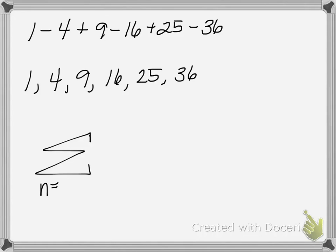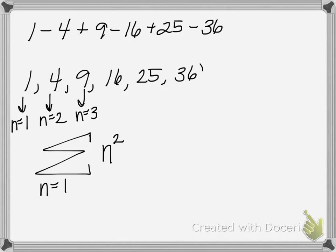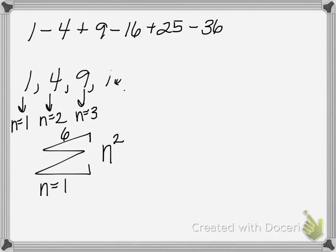Let's start with n equals 1 as our first term, substituting in 1, then 2 for the second term, 3 for the third, and so on. Hopefully you realize these terms are all perfect squares — we take the n value and square it to get each term. To get the last term of 36, we substitute in 6, since 6 squared is 36. This gives us values 1, 4, 9, 16, 25, and 36. Now we need to figure out how to handle the alternating signs.